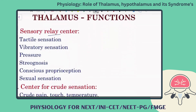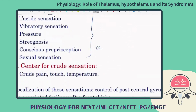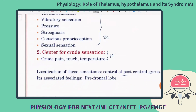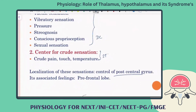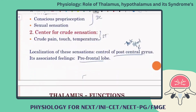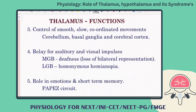As a sensory relay center, the thalamus handles all ascending tracts including the dorsal column pathway and spinothalamic tract. Localization occurs in the post-central gyrus, the prefrontal lobe for taste, and olfaction. It also relays signals for smooth and coordinated movements from the basal ganglia to the cerebral cortex.